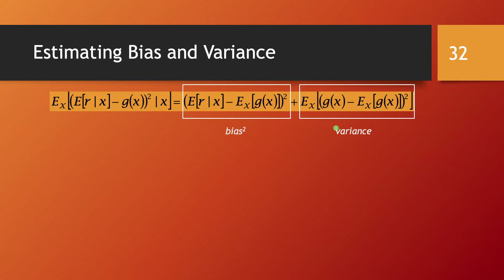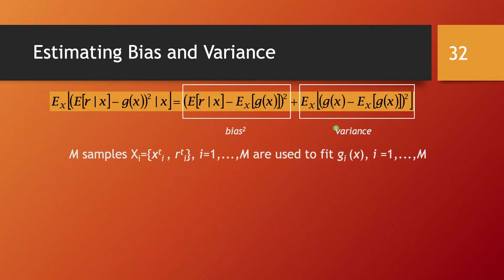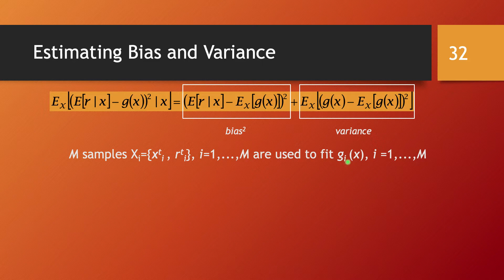To estimate the bias and the variance of a model, we take m samples, each made of some number of instances together with their labels. For each one of these samples we fit a model and get the best estimator for that particular sample, resulting in a function g_i of x. In the end we have m samples and m estimators g_i(x) with i from 1 to m.